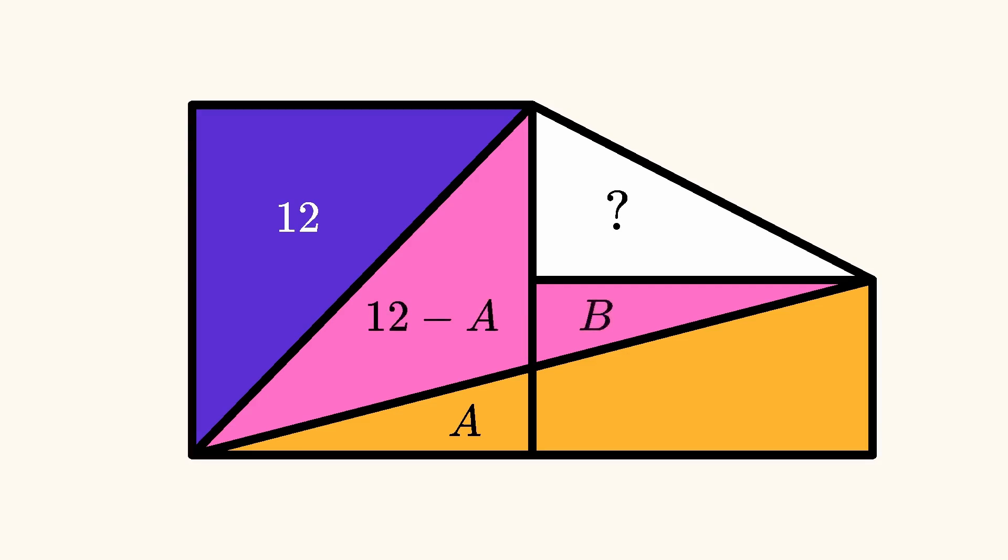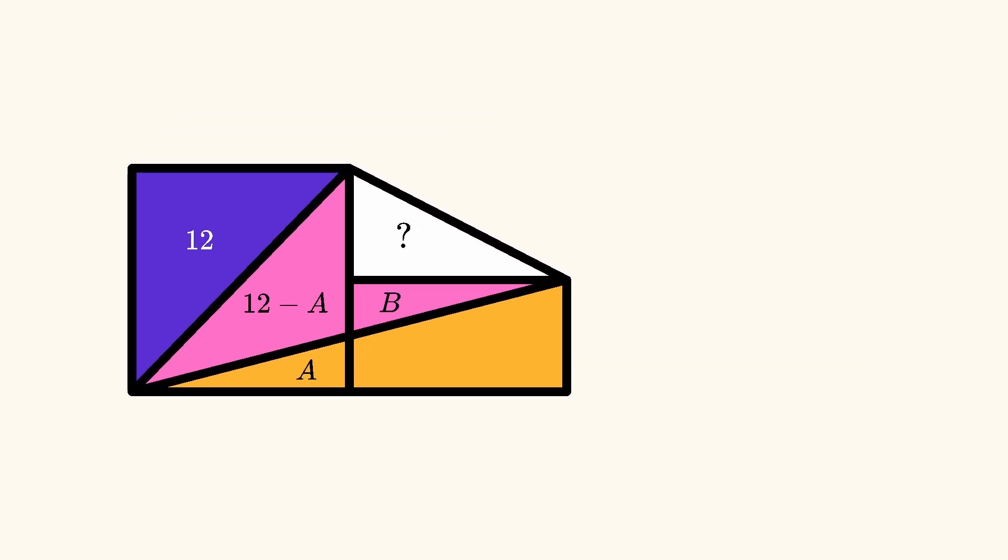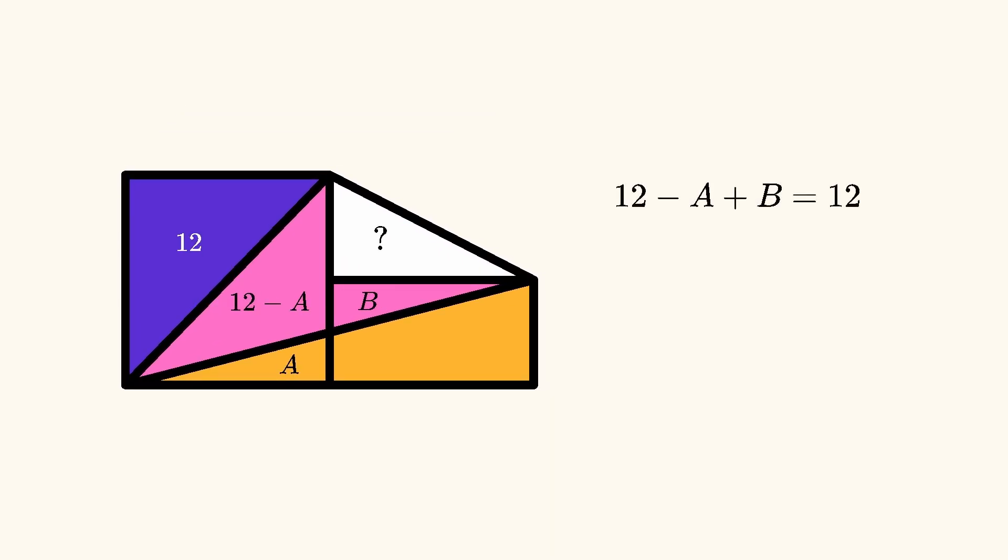If we let B be the pink area on the right side of the diagram, we have that 12 minus A plus B is equal to 12, which means that A is equal to B.